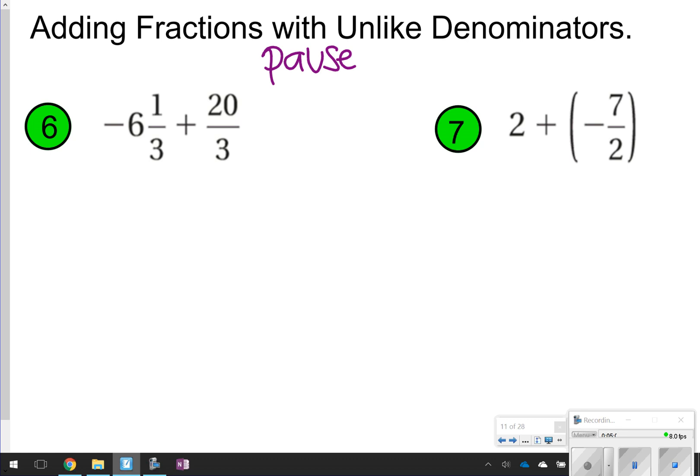So number six actually does have a like denominator, but notice that you have a mixed number and an improper fraction. So you could do one of two things here. Either make them both mixed numbers or make them both improper fractions. I think I'm going to make mine improper fractions, just because it looks like it might be easier to add or subtract here. So three times six is eighteen. Eighteen plus one is nineteen. So you get nineteen-thirds, negative nineteen-thirds plus twenty-thirds. And then it becomes really simple to figure out. Negative nineteen plus twenty, that's different sign subtract. So I'm going to subtract those. I get one. Keep my denominator the same. And I notice that my larger value is positive, so my final answer will also be positive.